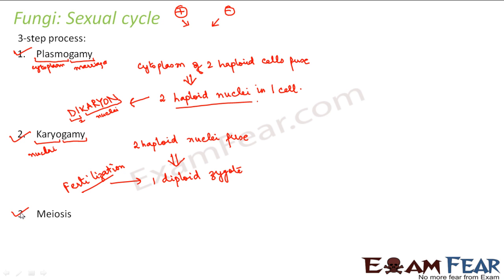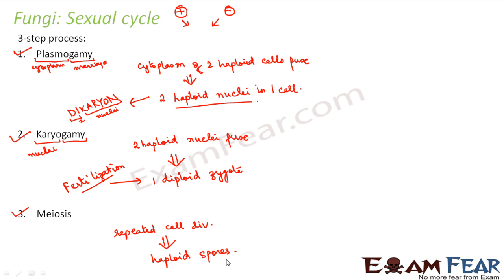The third step is meiosis. The diploid zygote undergoes repeated cell division, and as a result, gametes of different mating types are produced. In fungi, these sex cells are the haploid spores. These spores will again germinate and give rise to new mycelia, or new fungi. That is how sexual reproduction happens in fungi.